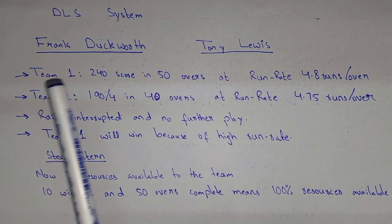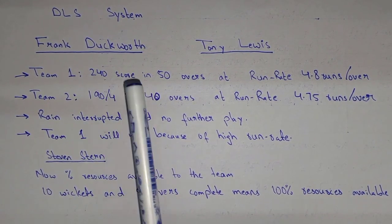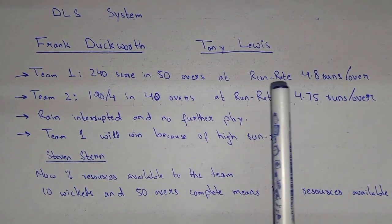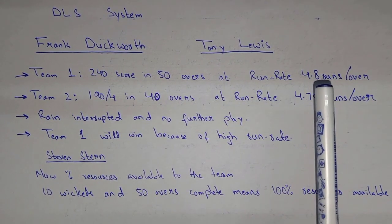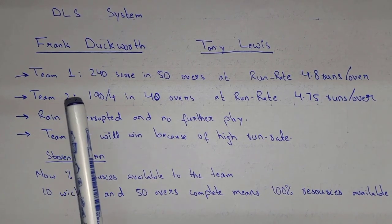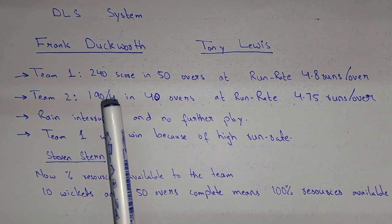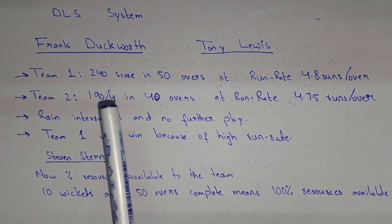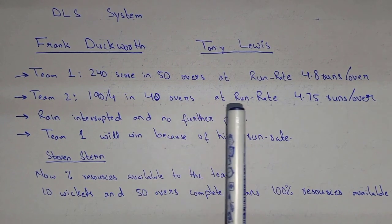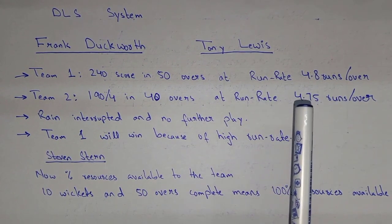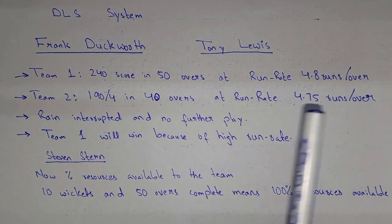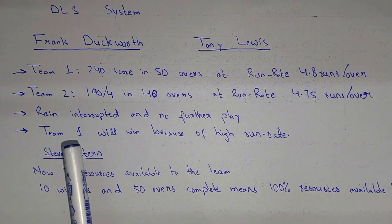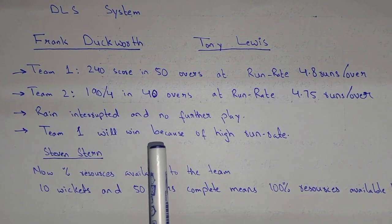According to the original system, suppose Team 1 was scoring 240 runs in 50 overs at a run rate of 4.8 runs per over. After that, Team 2 comes to play and is making 190 runs for the loss of 4 wickets in 40 overs at a run rate of 4.75 runs per over. The rain interrupts and there is no further play, so Team 2 would win because of the higher run rate.